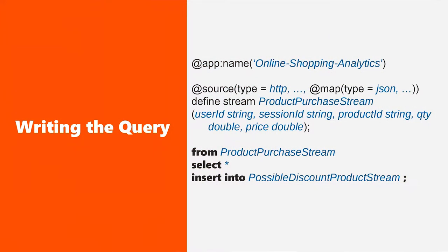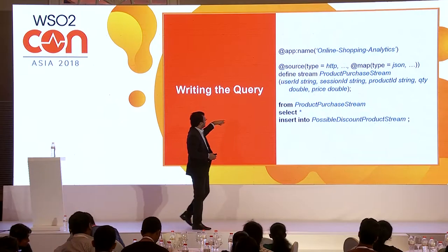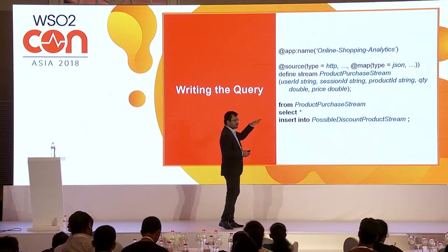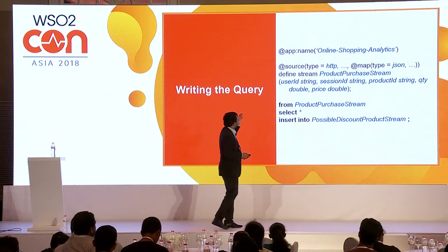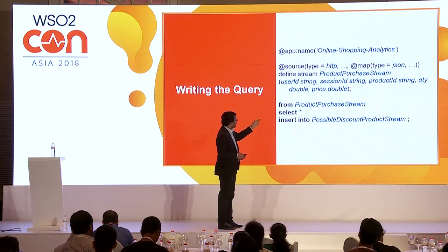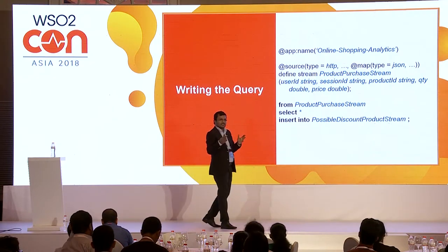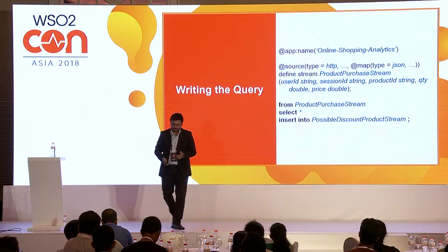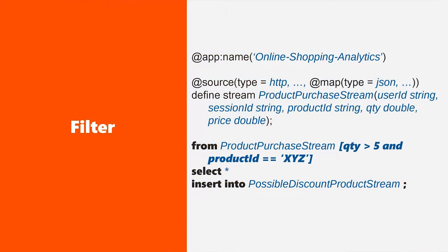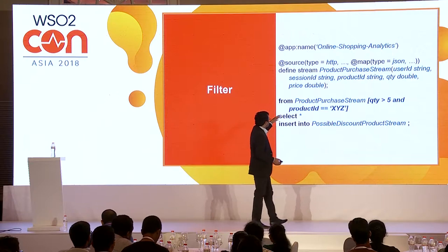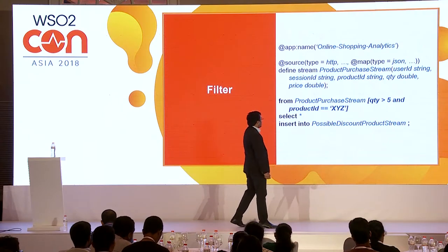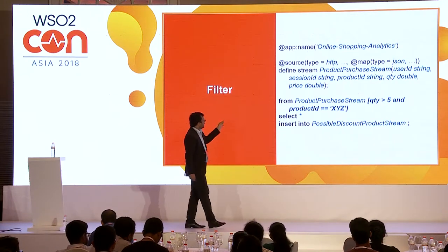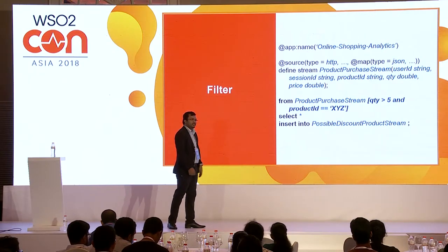Once events are received into a stream — for example, the product purchase stream — a simple SQL-like query lets you pass events through to another stream: 'from ProductStream select * insert into PossibleDiscountProductStream.' For filtering, you add conditions inside square brackets, such as sending only events where quantity is greater than five and product ID equals XYZ.